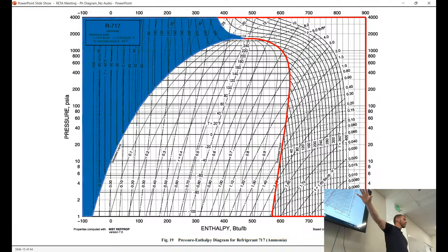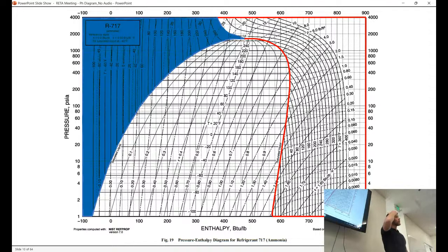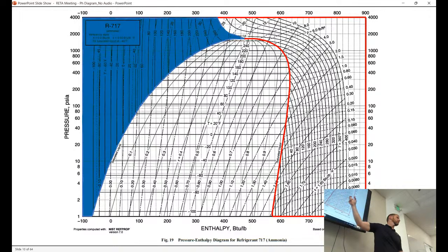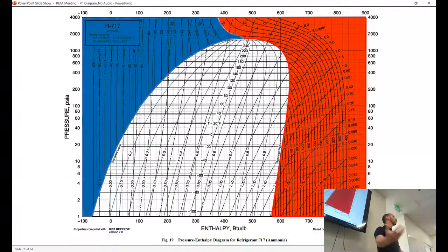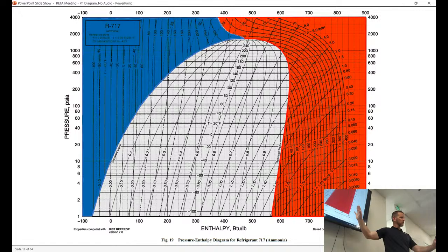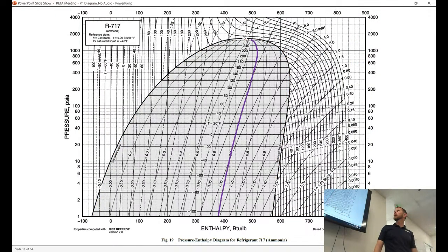Anything in that blue-shaded region is a sub-cooled liquid. Where do we get sub-cooling? The outlet of the pump could be sub-cooled. If you have a sub-cooler installed, certainly then you see sub-cooling. Maybe the outlet of a condenser if it's oversized — those would be typical spots. So if that's saturated, that's sub-cooled. What do you guys think this other region is going to be? Superheated, yeah. Where are we always superheated? Outlet of the compressor. We can also be superheated — but not always — at the outlet of the evaporator or the inlet to the compressor in a DX system.